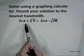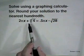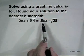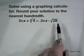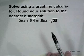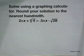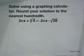Now we're going to use our graphing calculator in a different way to solve this more complicated equation: 2πx plus the cube root of 4 equals 0.5πx minus the square root of 28. We'll solve this problem using the equation solver in your graphing calculator.